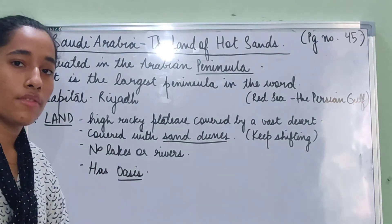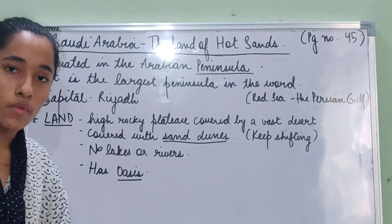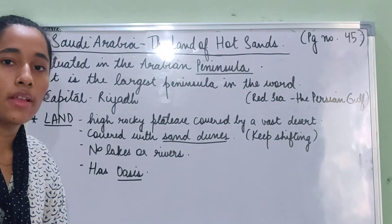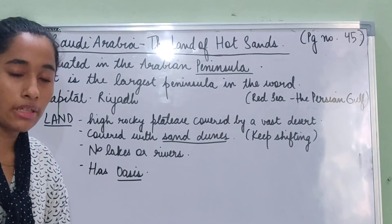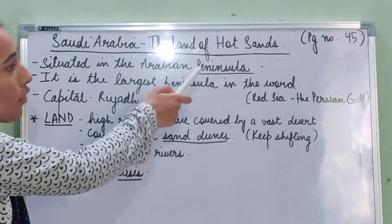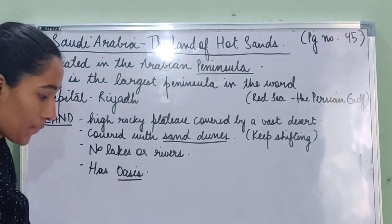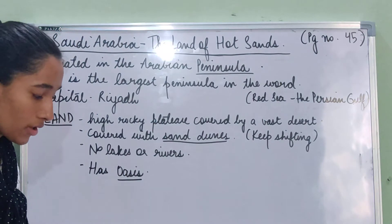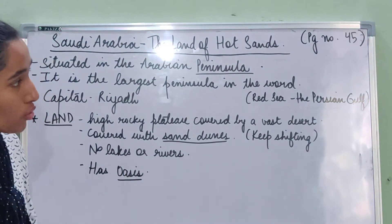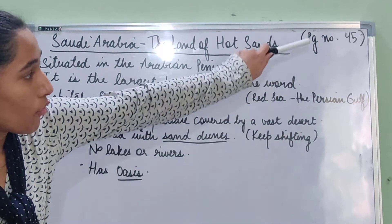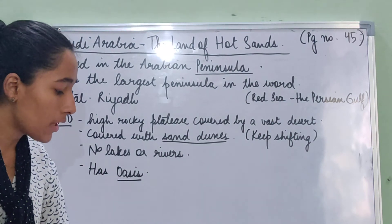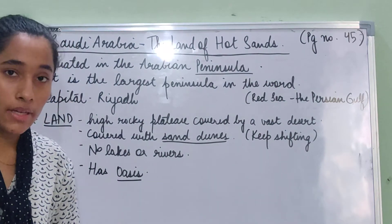Good morning students. Our revision time is over and now we are going to start with a new chapter that is Saudi Arabia, the land of hot sands. That is our chapter number 7. Open your books on page number 45. We are going to start with this chapter about Saudi Arabia.